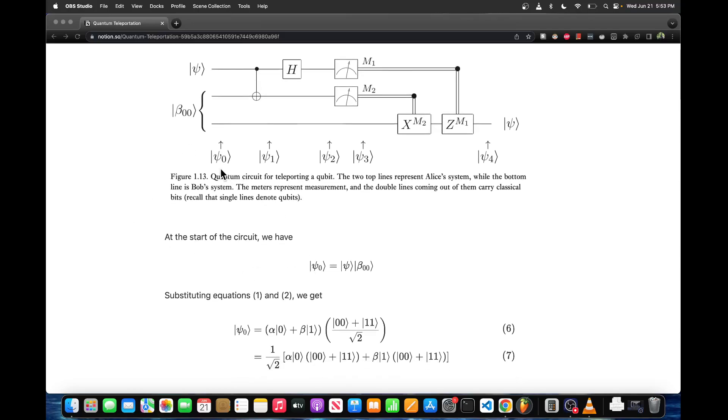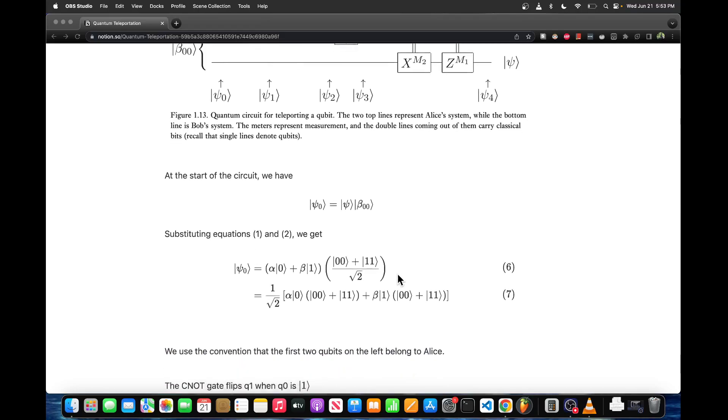We have some initial wave function for the entire system, psi 0, which is equal to the tensor product of psi (this is qubit 0) and qubits 1 and 2 respectively. By convention we're reading left to right, so this is qubit 0, this is qubit 1, and this is qubit 2. That's the convention we're using.